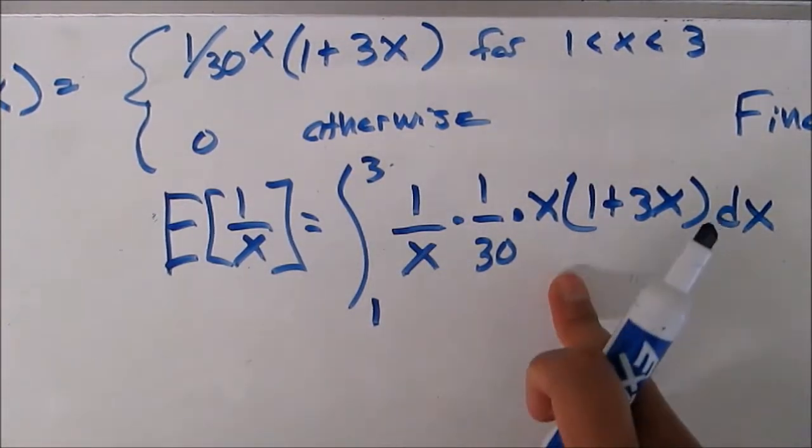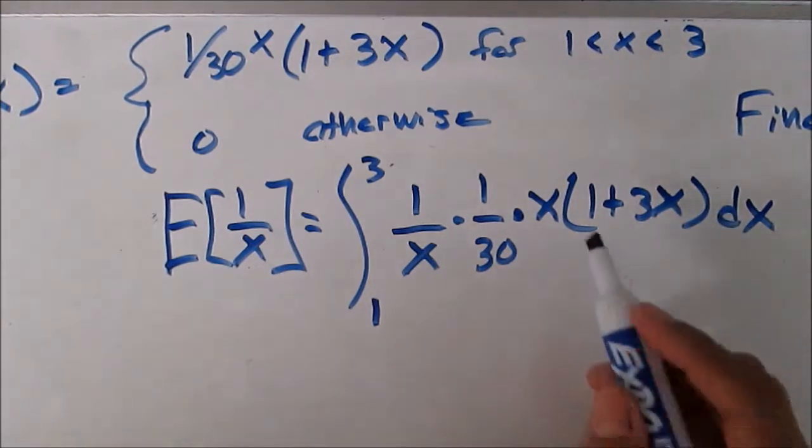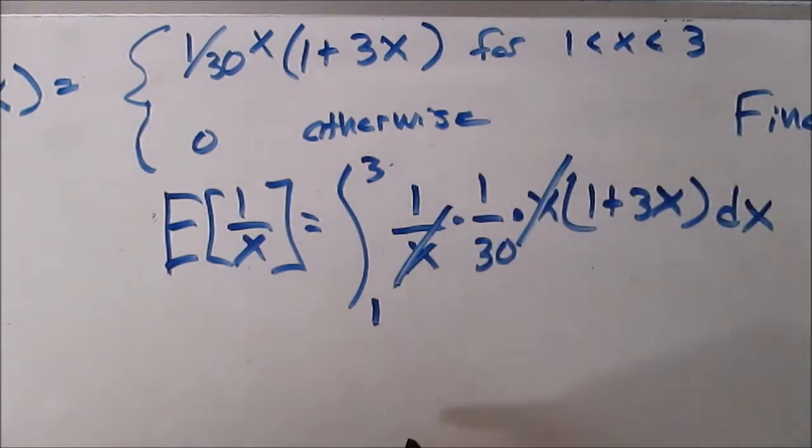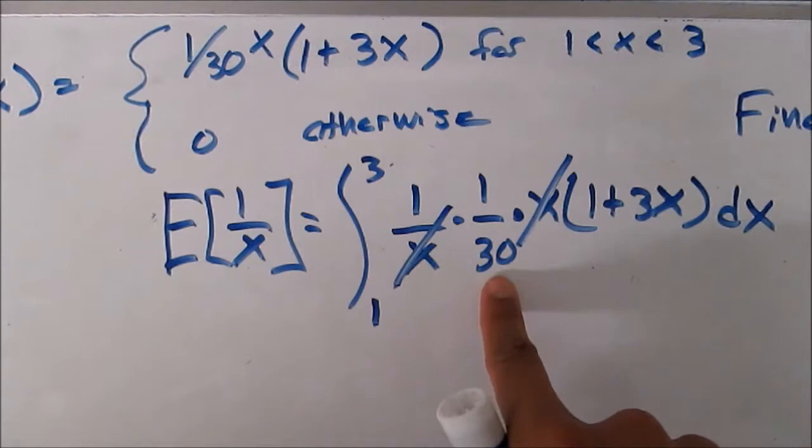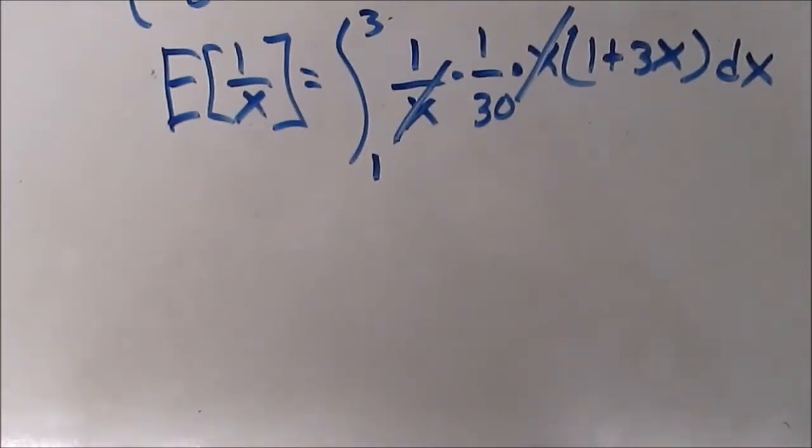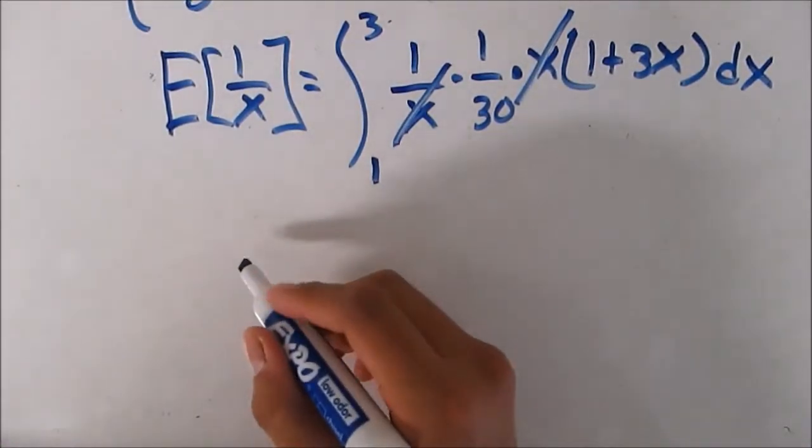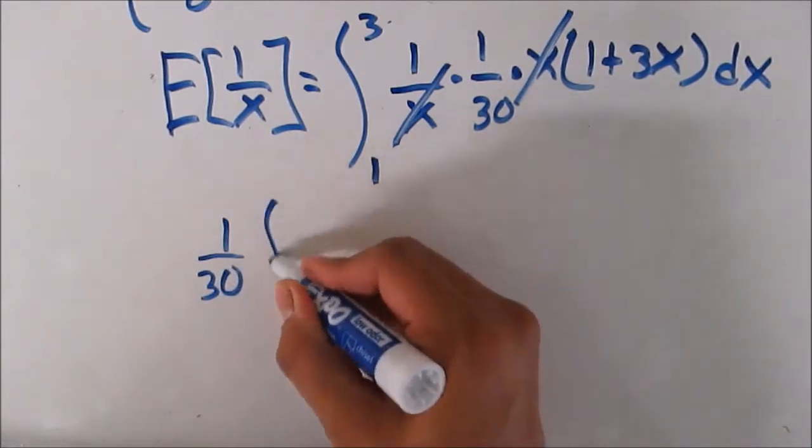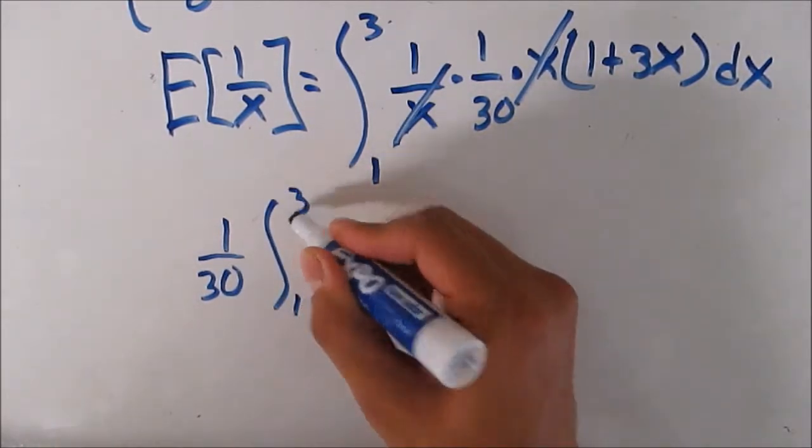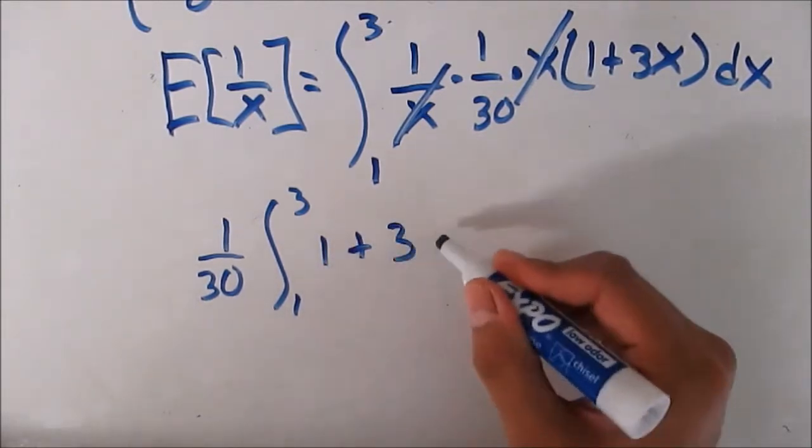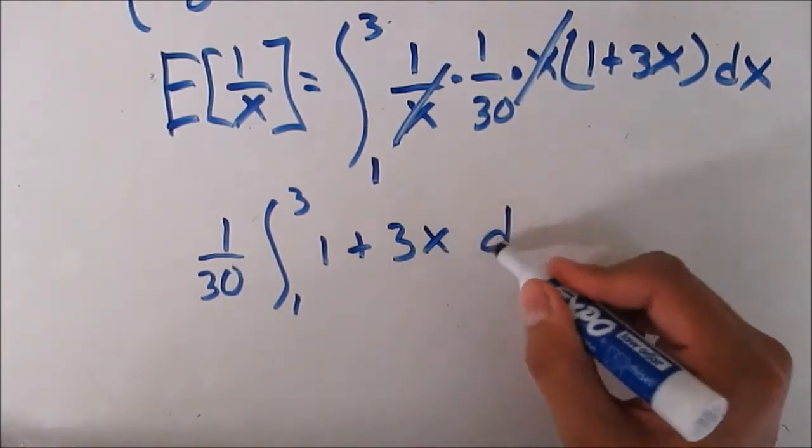All right, now notice we can actually cross this and this out so that cancels out. And then this can come out of the integral. So let me show you right here. So now that's 1 over 30 outside of the integral from 1 to 3 and that's 1 plus 3 x dx.